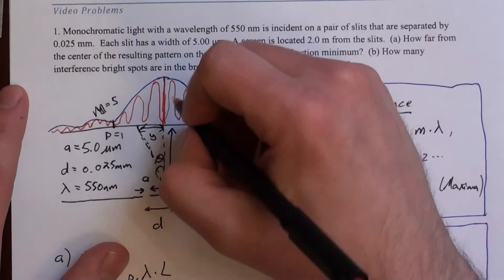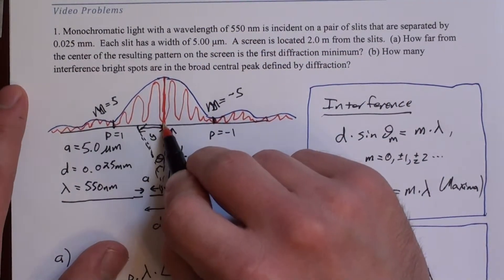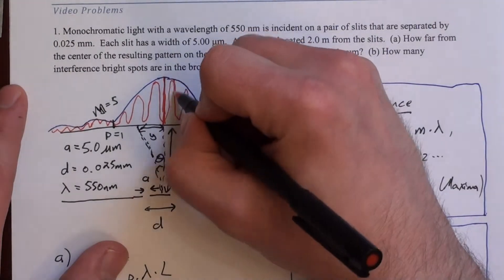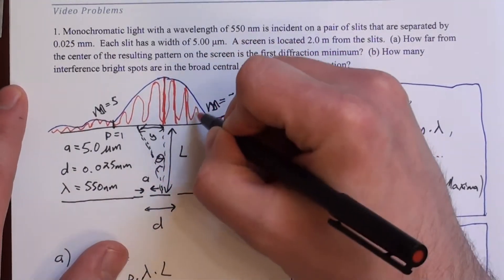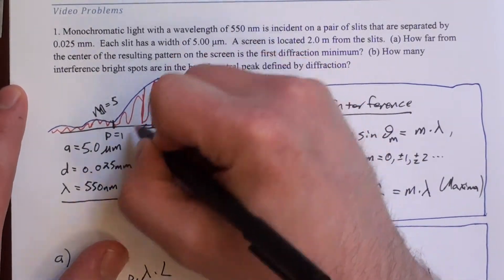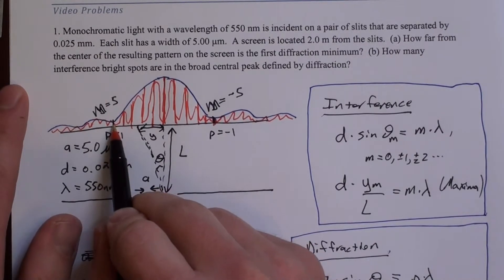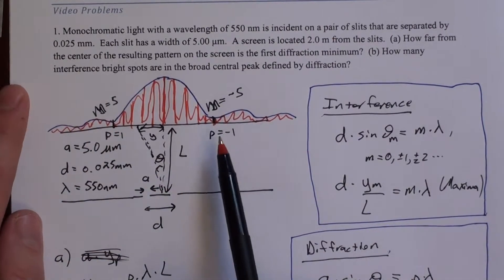So there have to be 4 more peaks between this and this, right? So I've got 1, 2, 3, 4, and then 5, and the same on the other side. 1, 2, 3, 4, and the 5 here. So how many bright spots are in between? Well there's 1, 2, 3, 4, 5, 6, 7, 8, 9.